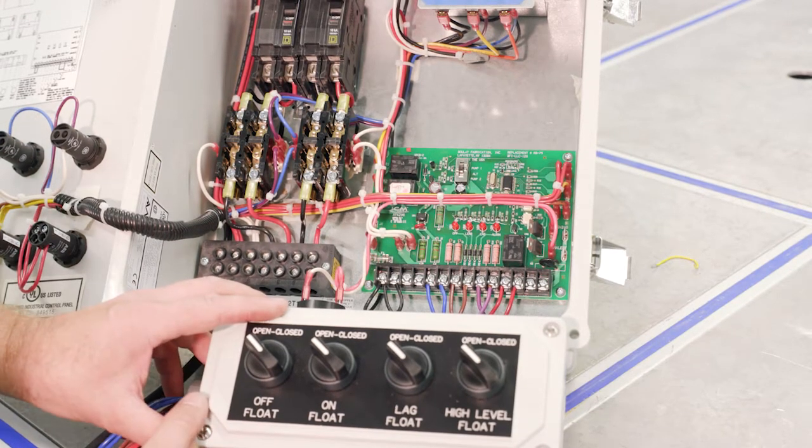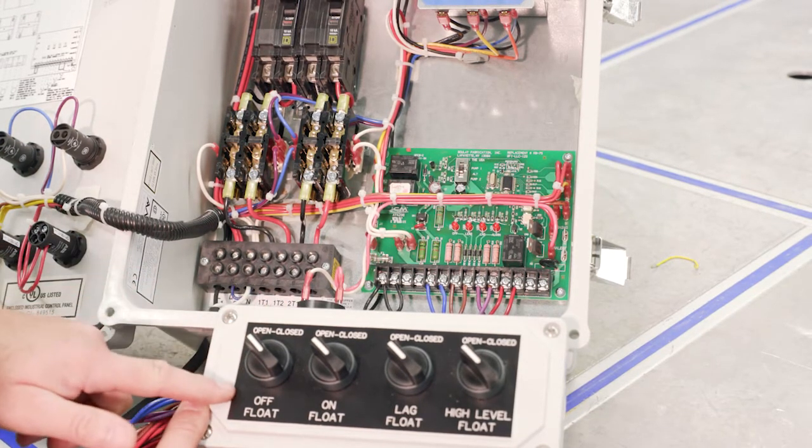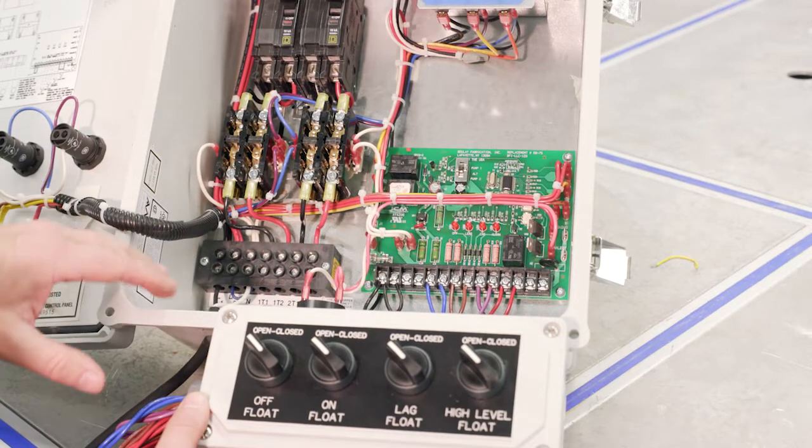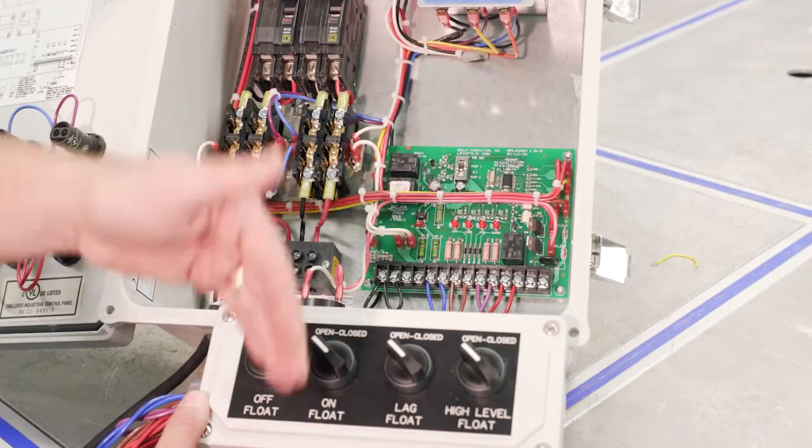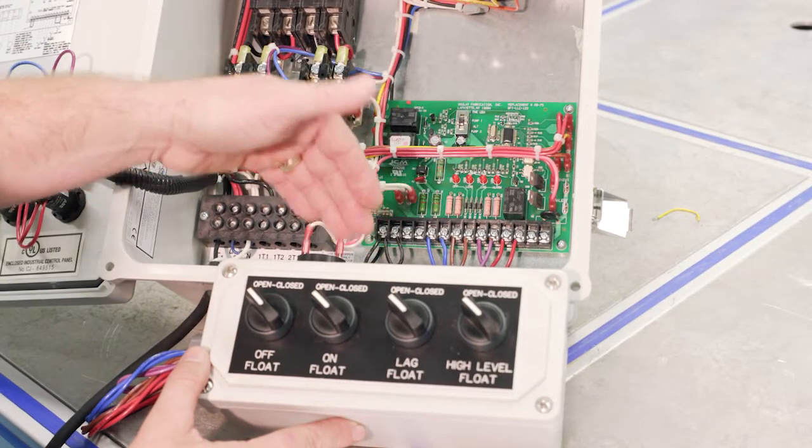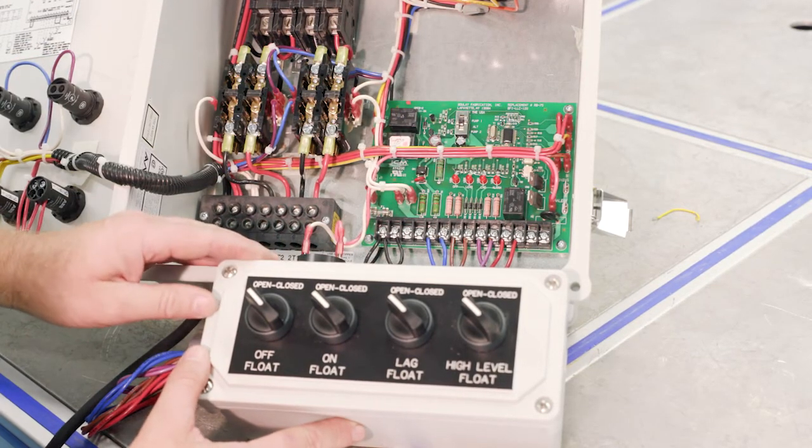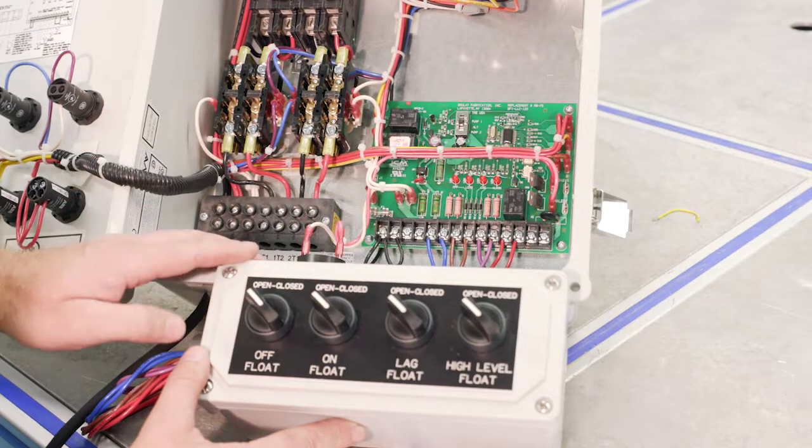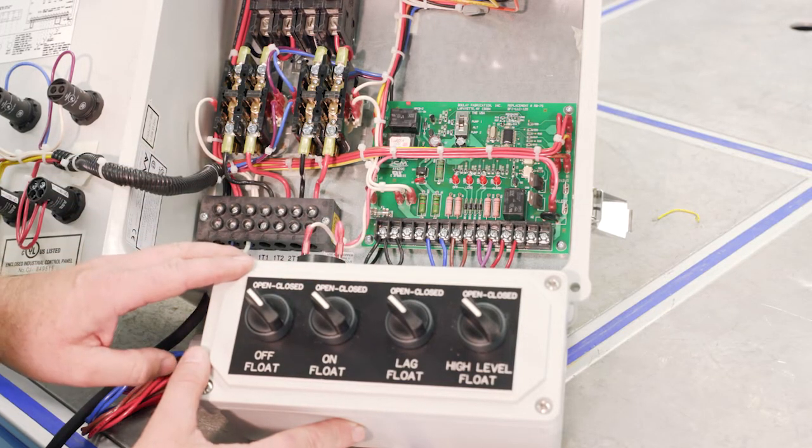So that is a typical four float system, and so if we're still having issues, then that means that there are issues with the floats in the basin because everything else is working out here, and the switches are working like they're supposed to work.